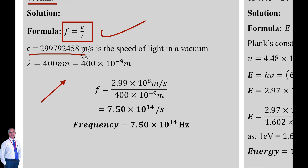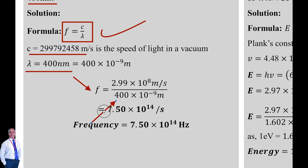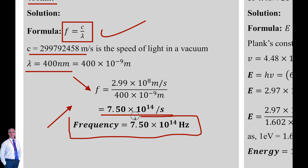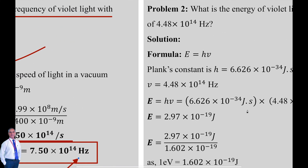Lambda is given as 400 nanometer. Converting it into meters: 400 × 10⁻⁹ meter, as nano stands for 10⁻⁹. Putting all these values in the formula: f = (2.99 × 10⁸) / (400 × 10⁻⁹). We get the final answer 7.50 × 10¹⁴ per second. As frequency is 1/t, the frequency is inversely proportional to time. So f = 7.50 × 10¹⁴ hertz. This is the solution of the first problem.